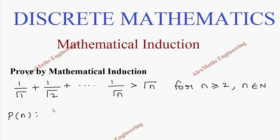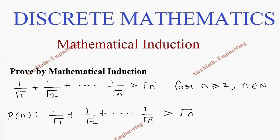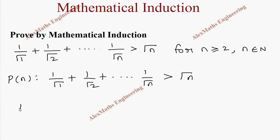Let's take this entire expression as P(n), that is 1/√1 + 1/√2 + ... + 1/√n > √n. The first step is to find what P(2) is, because this expression is valid when n is greater than or equal to 2, so the first value is 2.